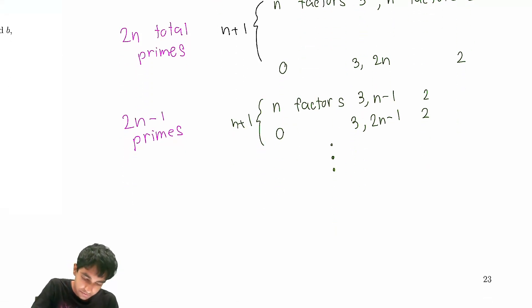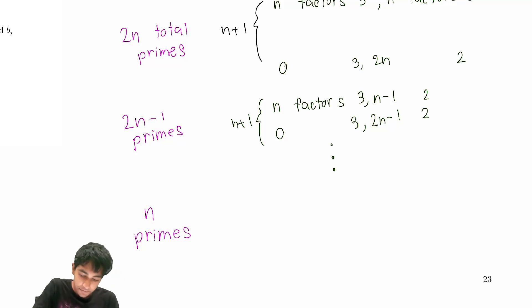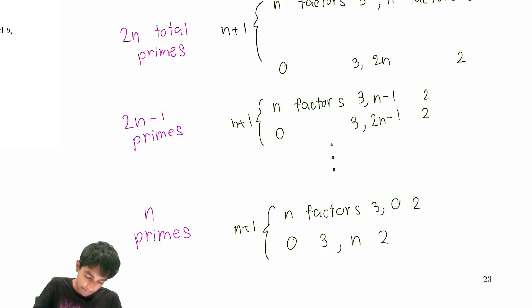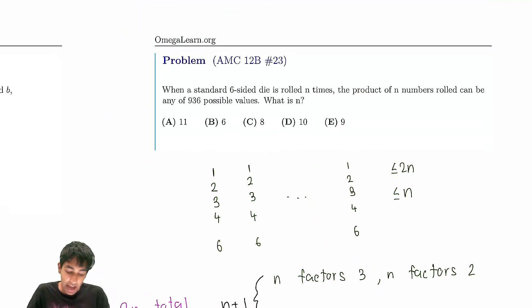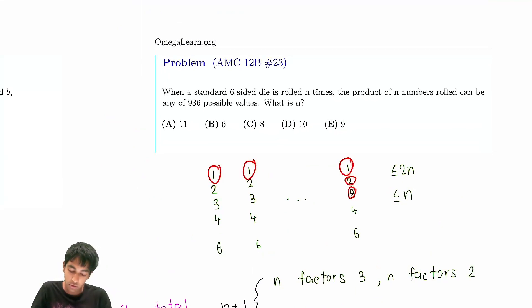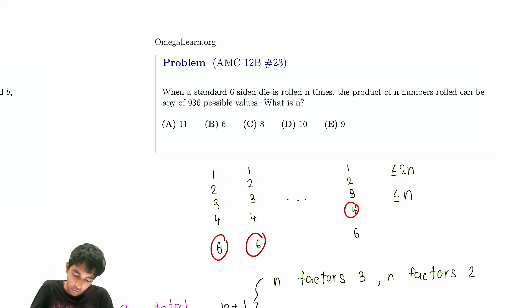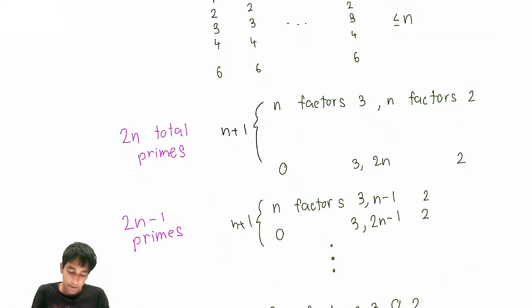This continues all the way down to n total prime factors, giving n+1 possibilities each time. But once we go to n−1 total prime factors, the situation changes. The reason we can achieve any number of total prime factors from 0 up to 2n is that we can always use 1s to reduce the count, or swap a 4 for a 2, or a 6 for a 3, to step down by one. So every integer value from 0 to 2n is achievable.